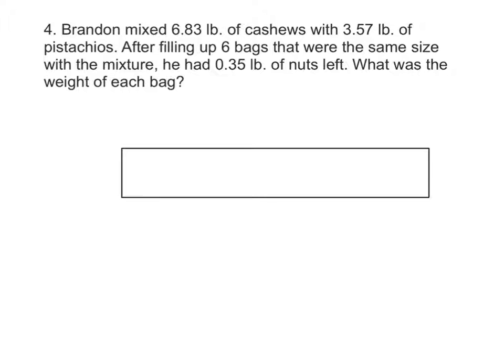So in this case, what is the question asking? The question is asking, what was the weight of each bag? And we need to know the important information. You're going to do this in your notebook too. First, Brandon mixed 6.83 pounds of cashews with 3.57 pounds of pistachios. Then he took that mix and divided it equally into six bags. After he was done with that, he still had 0.35 pounds left. So that is all important information. Let's draw a tape diagram in order to help us figure this out. Go ahead and draw yourself a blank piece of tape so that we can use a tape diagram.